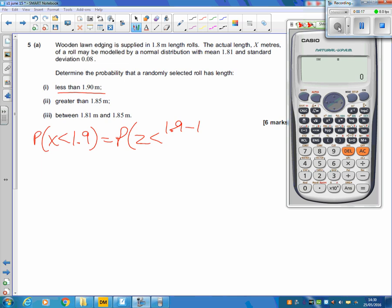1.9, take away the mean. Be careful to use the mean, it does tell you it's 1.81, and divide by the standard deviation. We'll tap that into the calculator, and we find out that that is 1.125.